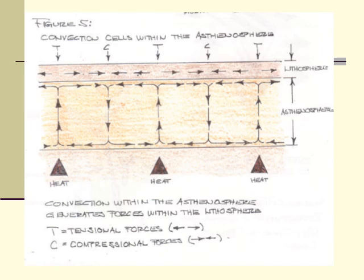This is a better picture of thinking about the crust and the convection cells within the asthenosphere or lower mantle. We have tension forces, which force plates apart — we think of those as divergent boundaries. And we have compressional forces where the plates are coming together — we refer to those as convergent boundaries.